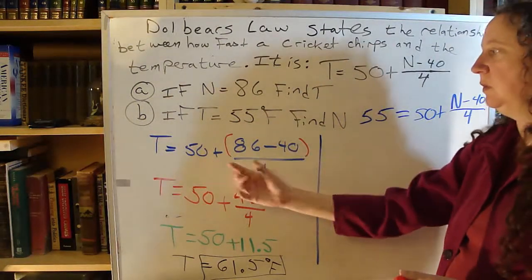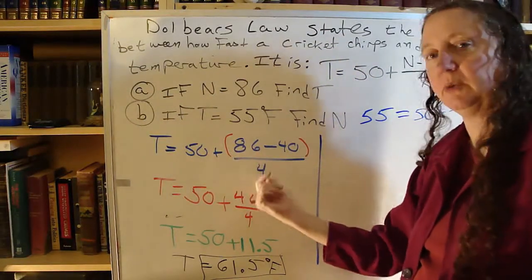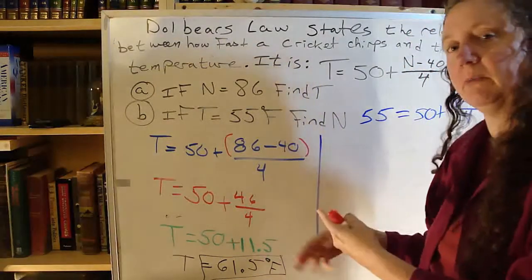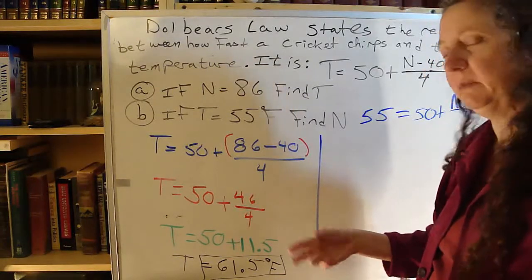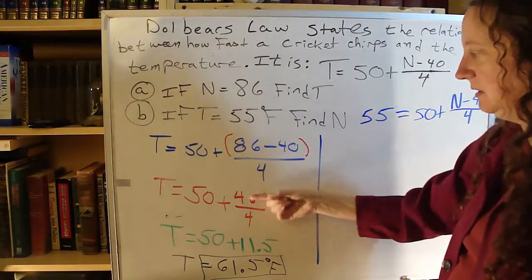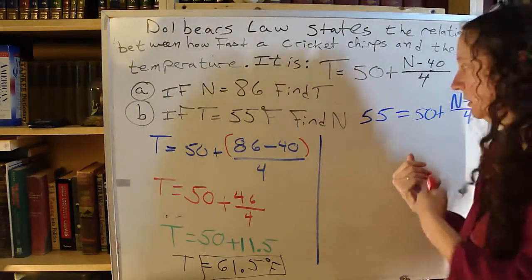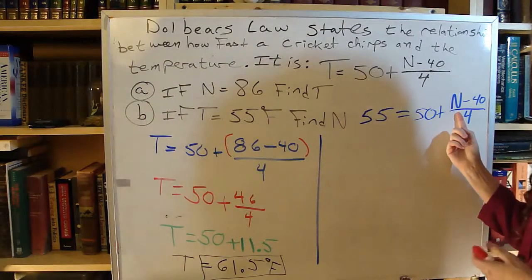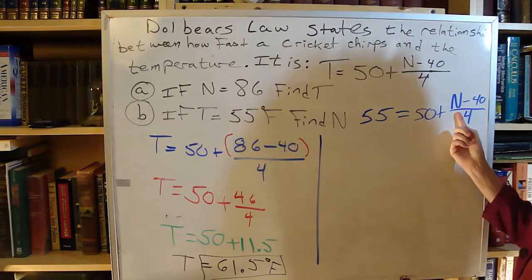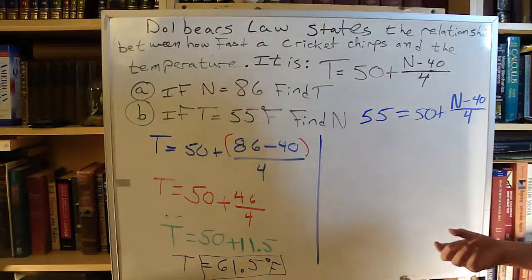Over on this side, we were given the value of the number that had all of the other numbers on the same side of the equal sign with it. So I followed my order of operations forwards. PEMDAS. Please excuse my dear Aunt Sally. Parentheses first. Exponents, there weren't any. Multiply, divide. Then add, subtract. Over on this side though, my letter that I'm trying to solve for has all of the other numbers with it. So now I have to go backwards with my order of operations. So I go to my add, subtract first.